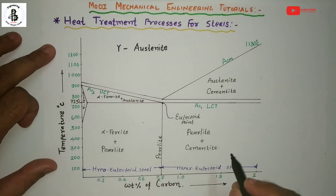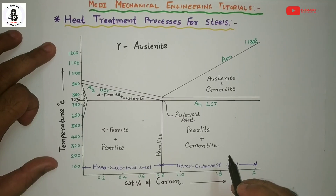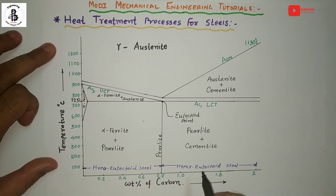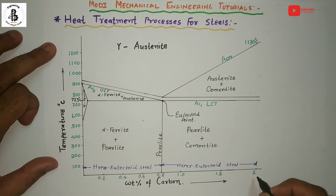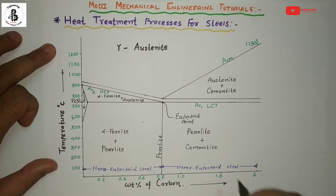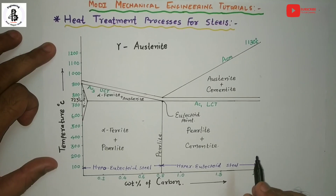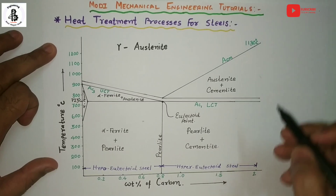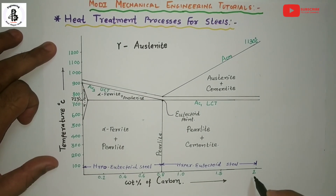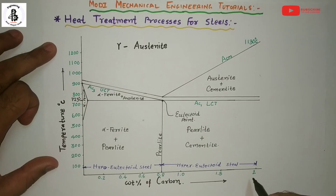Before starting the heat treatment process, there will be a general layout of the heat treatment process chart. This will be related to the iron-carbon diagram for up to 2% carbon present in steels, because heat treatment processes are applicable to steels. We are only considering up to the temperature range of 1130°C in the iron-carbon diagram, and the weight percentage of carbon up to 2%, because steel is defined as up to 2% carbon present with iron.